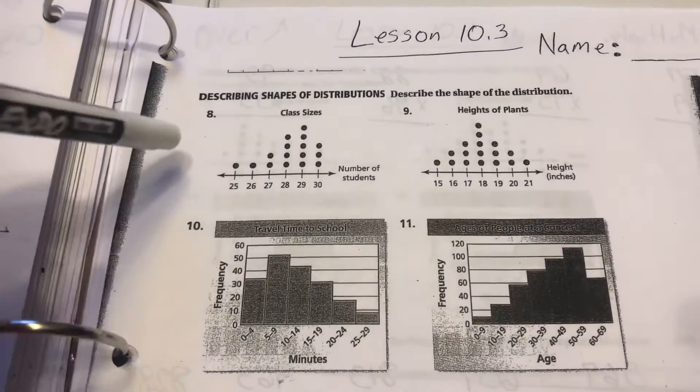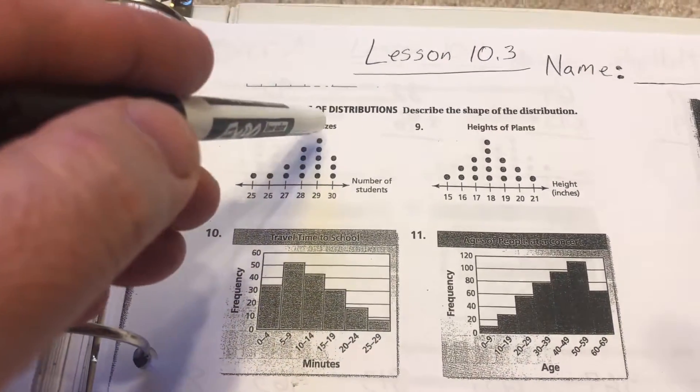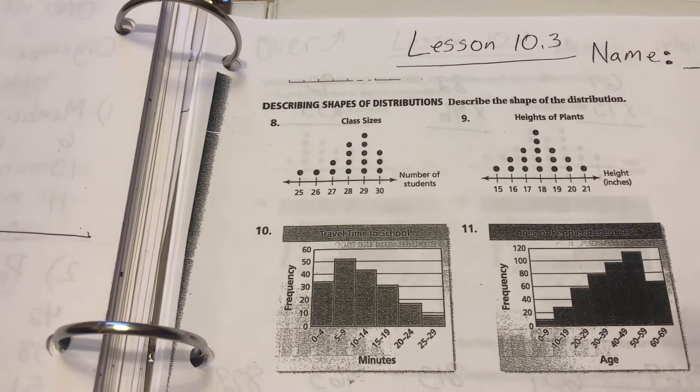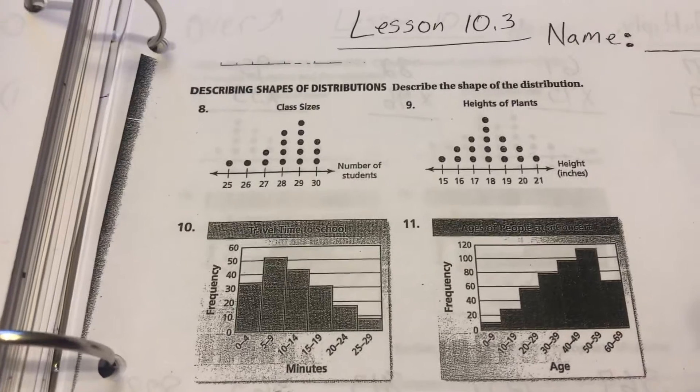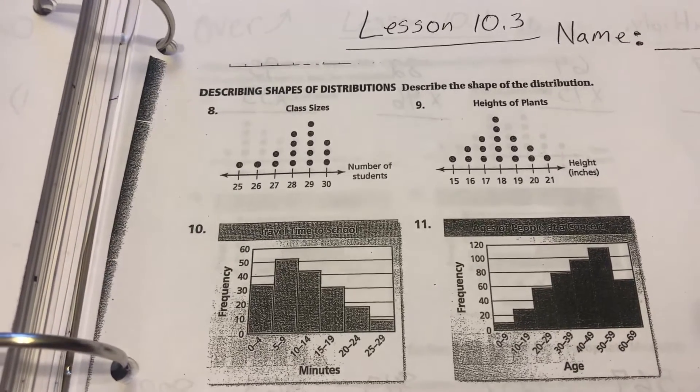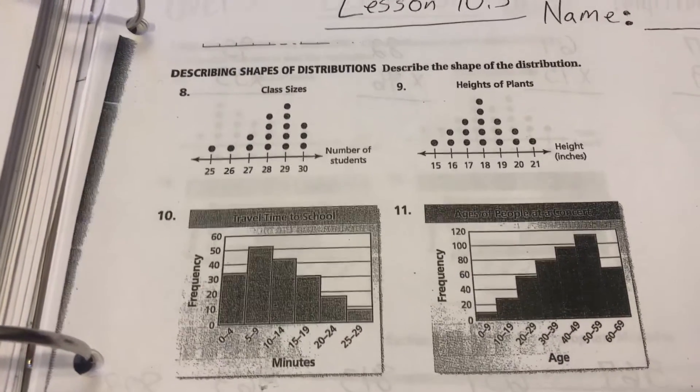So when I look at this one, I see that it's kind of skewed to the right there, and so I'm going to call that it uses the median to describe the center, and uses the variation of the interquartile range.